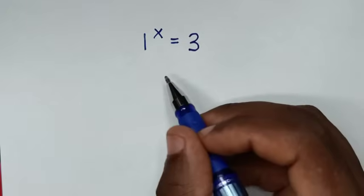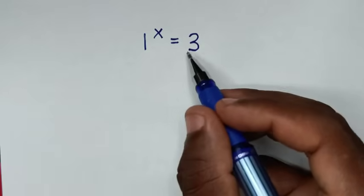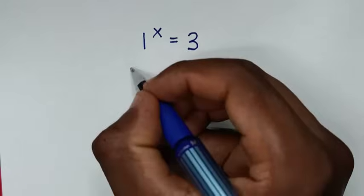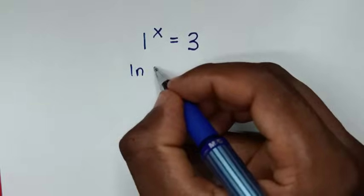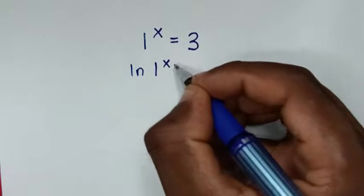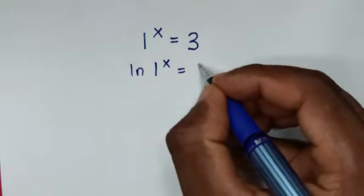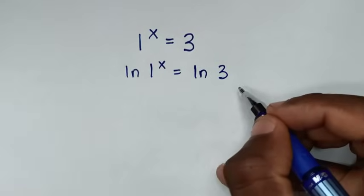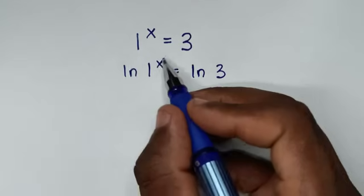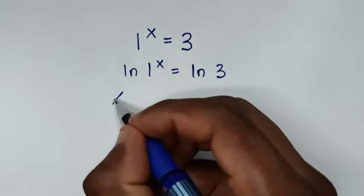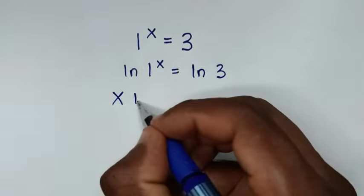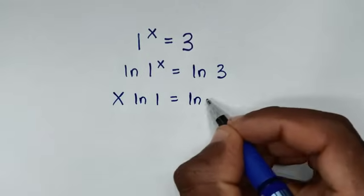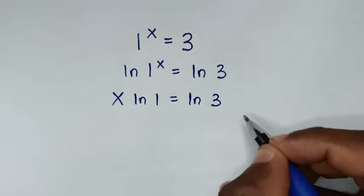By applying natural log, which is ln, on both sides, it will be ln of 1 to the power of x is equal to ln of 3. Then, this power of x will move to the front, so it will be x times ln of 1 is equal to ln of 3.